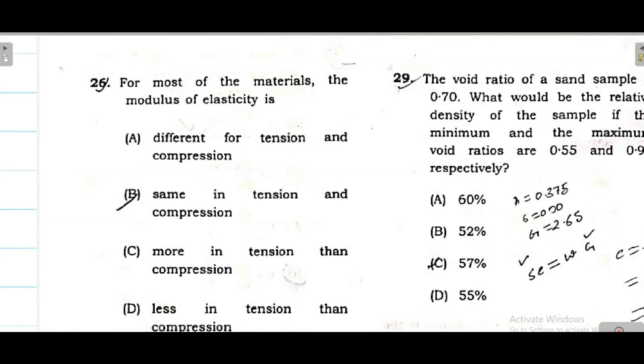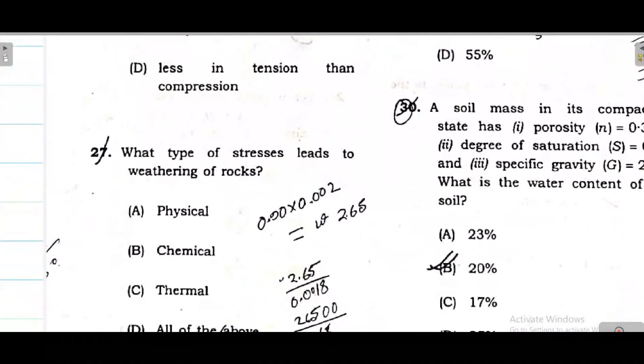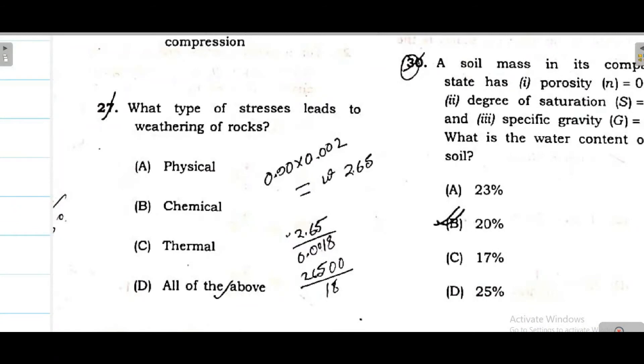Question 25. The free body diagram is indicative of static equilibrium. Question 26 - for most materials, the modulus of elasticity is a constant parameter. Whether tension or compression, modulus of elasticity will be fixed. Next question 27 - what type of stress leads to weathering of rocks? Physical stress. Option D is correct.